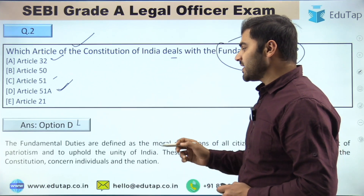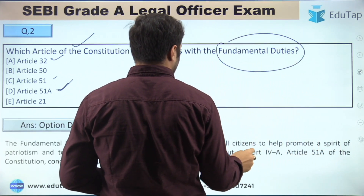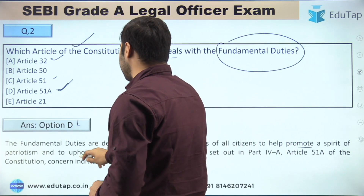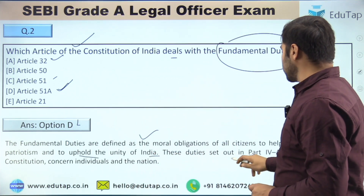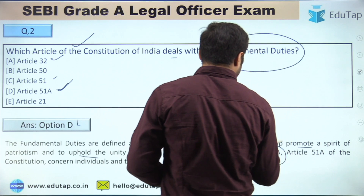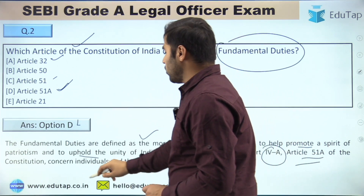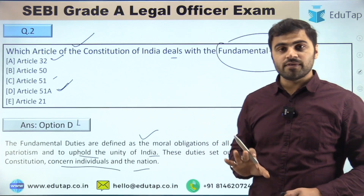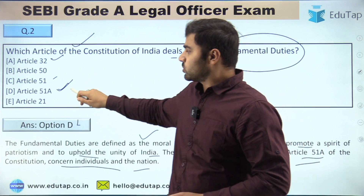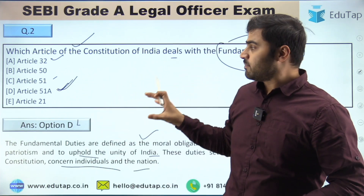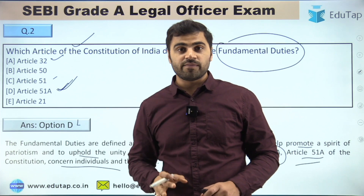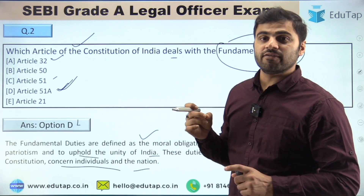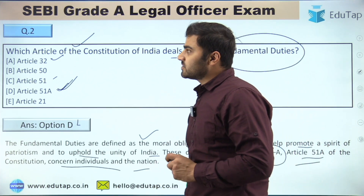The right answer is option D — Article 51A. Fundamental duties are defined as the moral obligations of all citizens to help promote a spirit of patriotism and to uphold the unity of India. These duties are set out in Part 4A, and Article 51A concerns individuals and the nation. You also need to go through all the important duties mentioned in Article 51A, as questions are asked from those provisions as well.